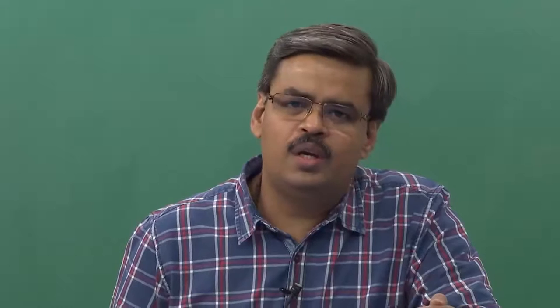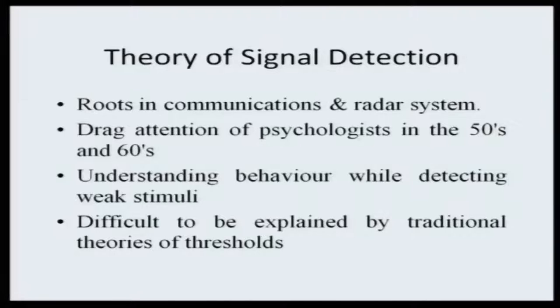Right now we are looking at the strength of the signal. Let us come to an interesting theory that has its roots in communication and radar systems, but in the 1950s and 60s it attracted the attention of psychologists who were interested in understanding human behavior. They tried to understand the strength of the signal and its role in detection of stimuli, especially in conditions where the intensity of the signal is very weak. Weber's law and Fechner's law were not sufficient to explain how human beings respond when signals are weak — and this led to what is called the theory of signal detection.